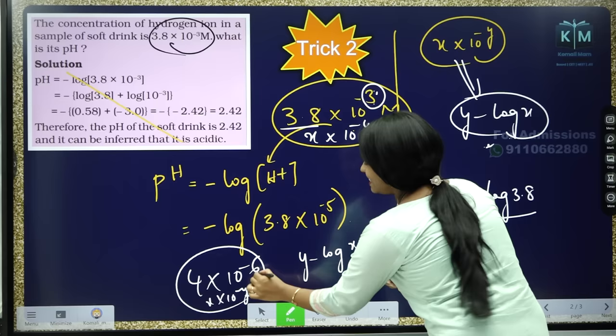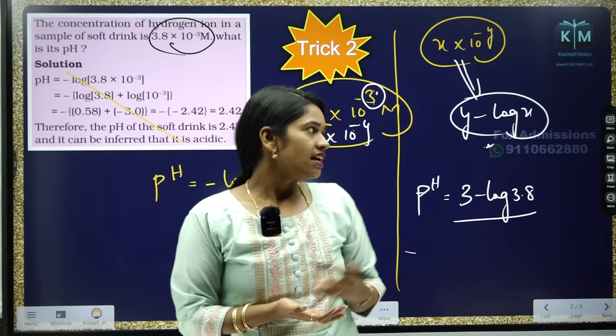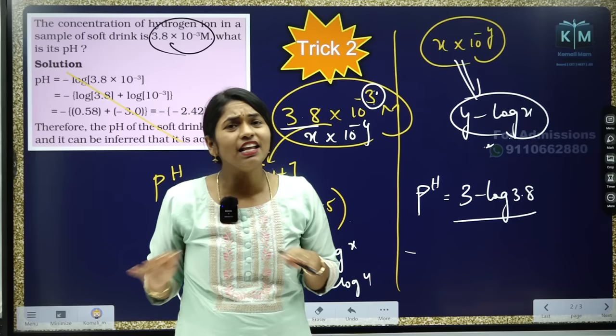Y is 6, X is 4, so pH = 6 minus log 4. After this step, the question is: how do I solve the log value? Whether it's 3.8, 6.8, 32, or 45 — any log value you can solve simply if you know just a few log values, which I will write on screen.